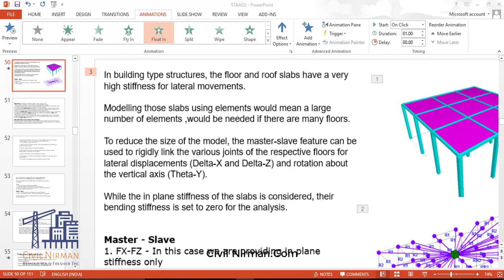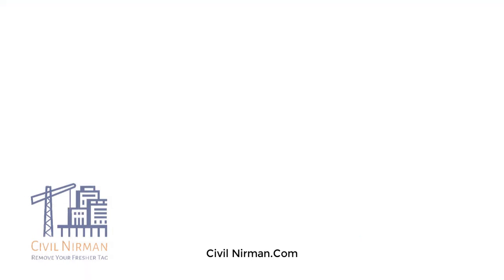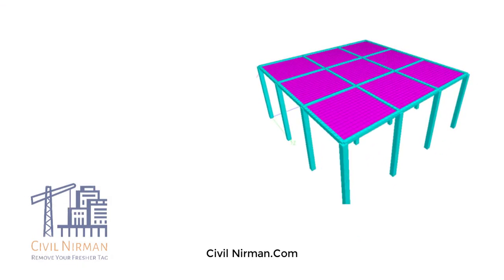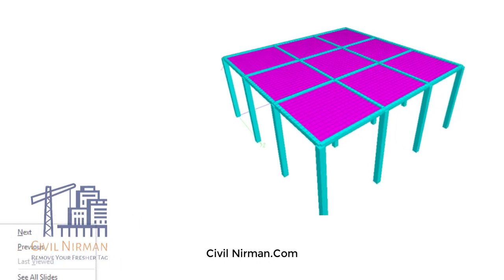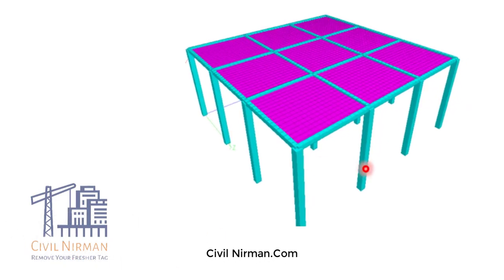Now let's look at the second option. You have the option to model your structure utilizing plate elements. As you can observe, model all slabs with plate elements — each slab should be bounded by four beams as a single rectangular element. Also, specify all those plates as plane stress elements. That's how, if you don't want to use floor load, you can model your slab in terms of plate elements and provide the thickness accordingly.